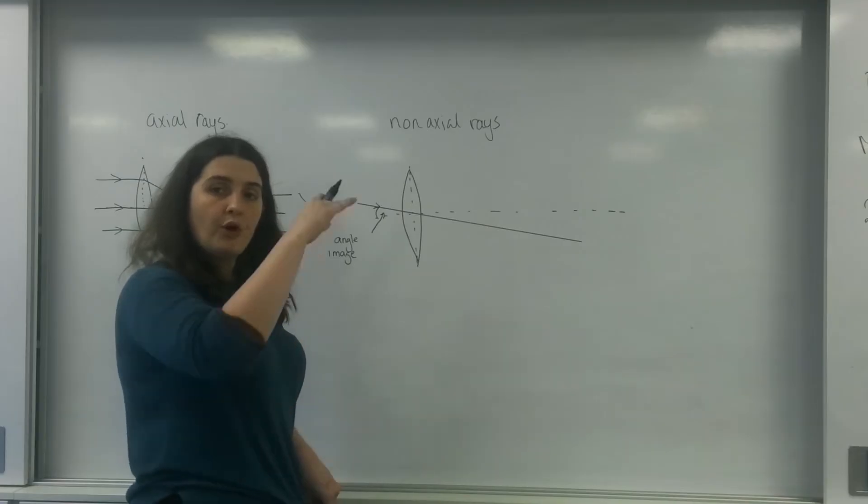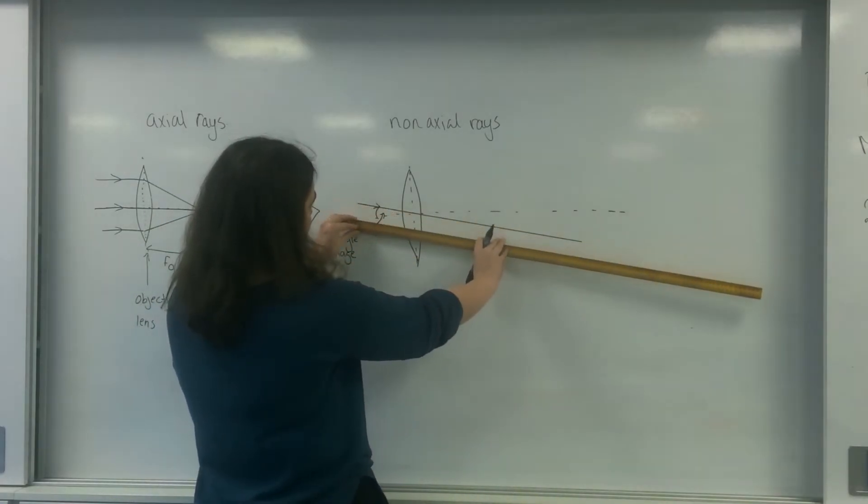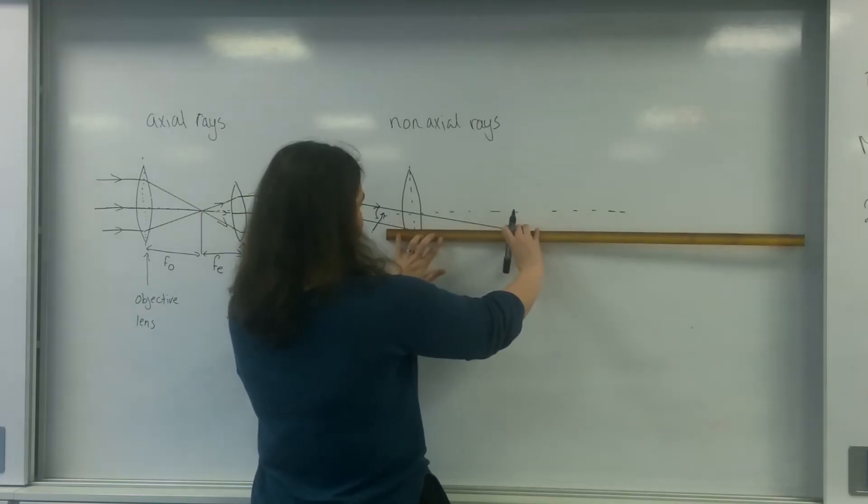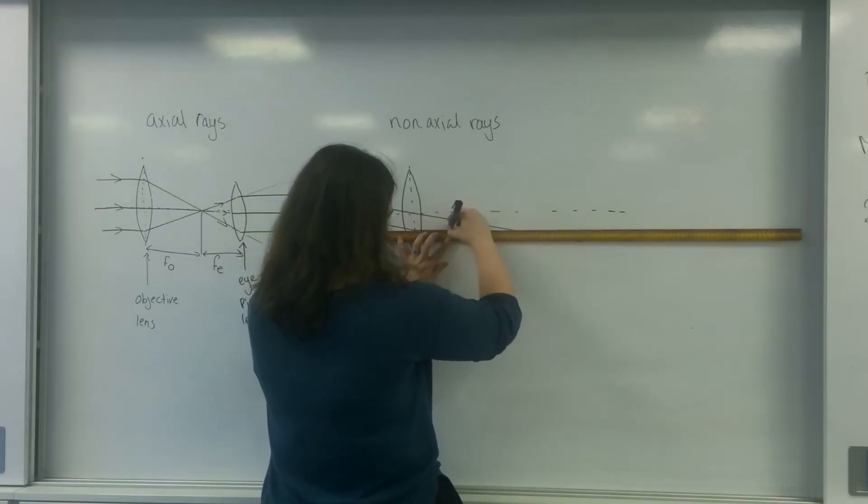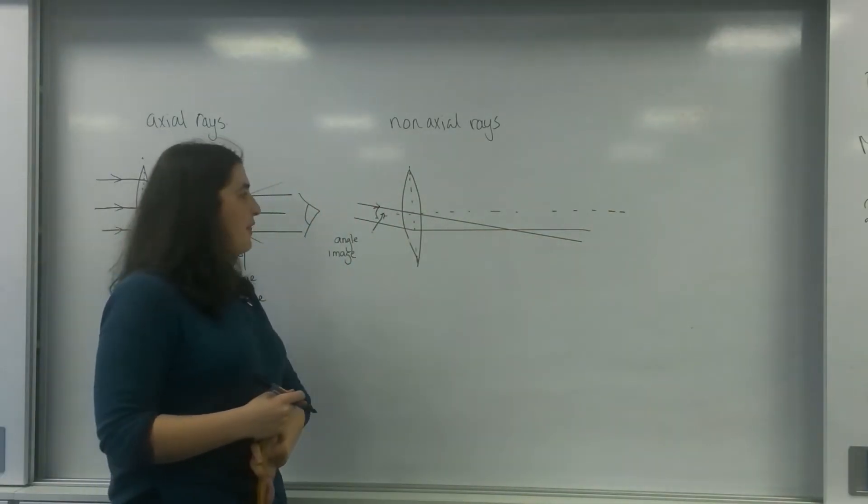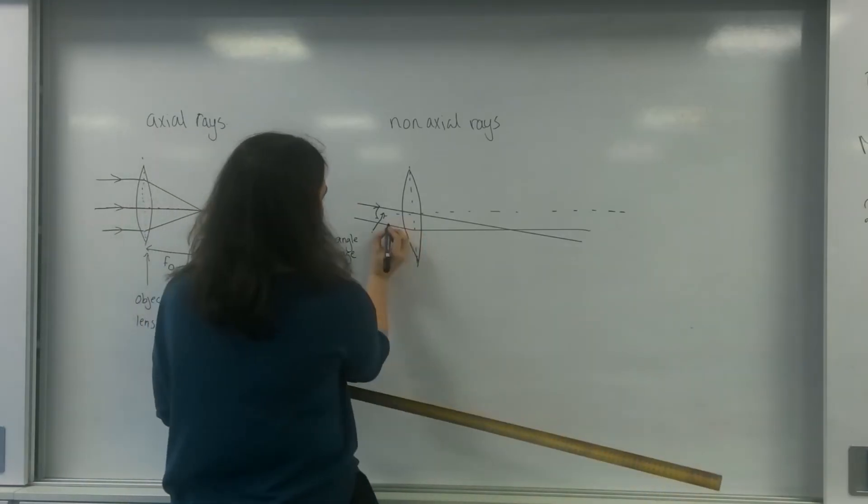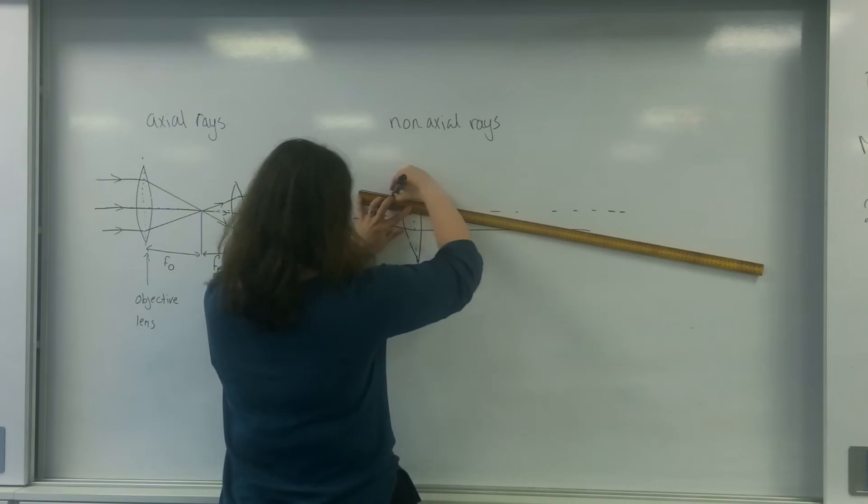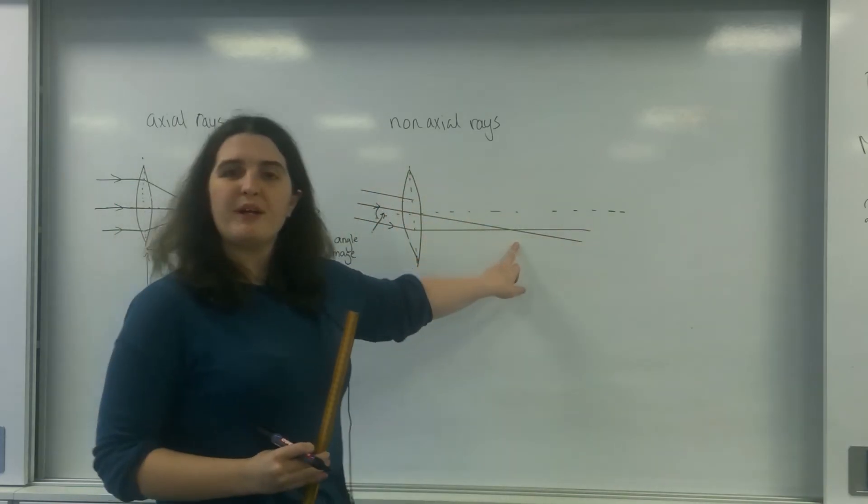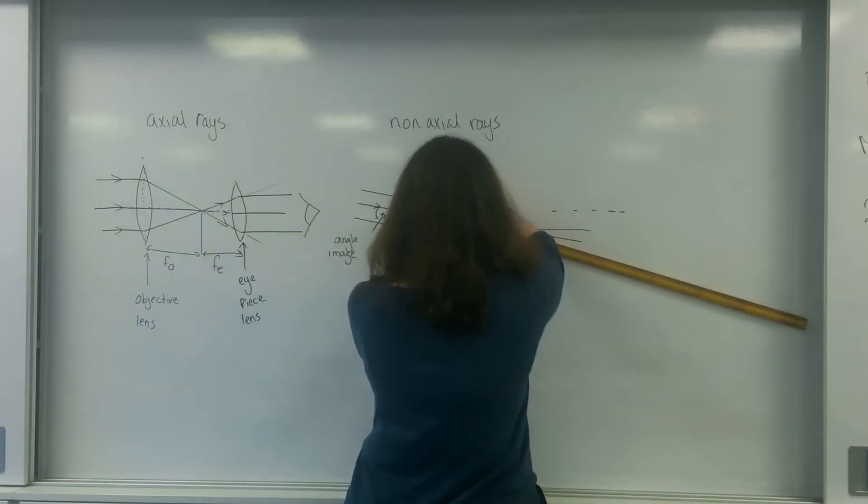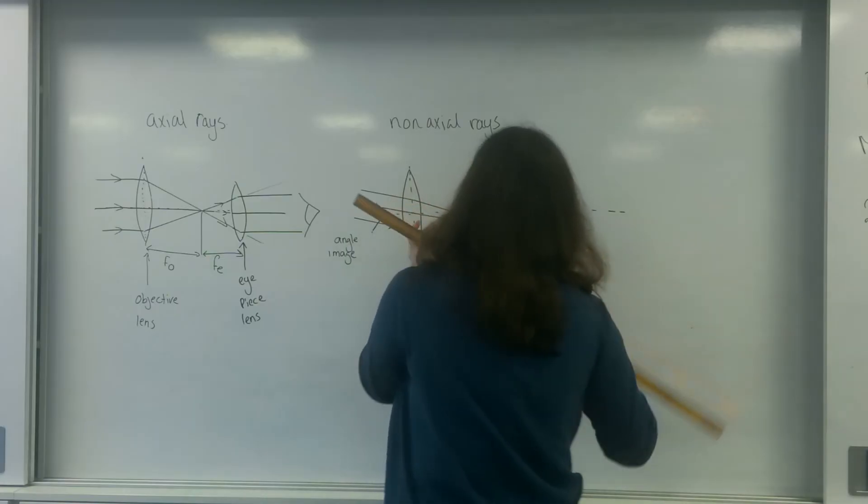I then draw the one below it. I have a line coming in parallel and this one then goes dead straight. Then I draw another one, the one above it, coming in. Because I've already got my starting focal point, I force it through that.